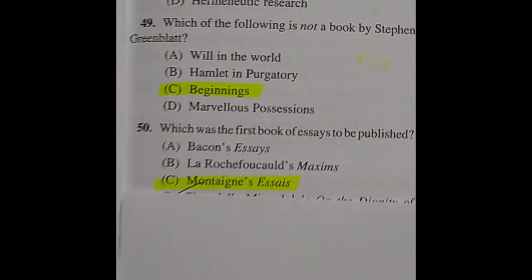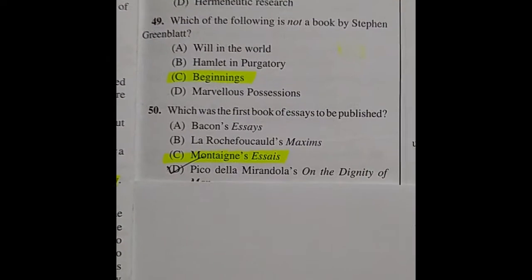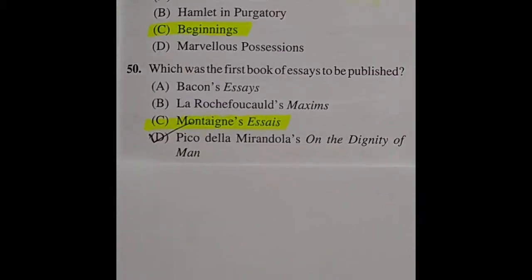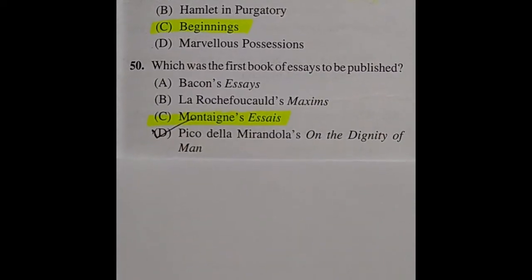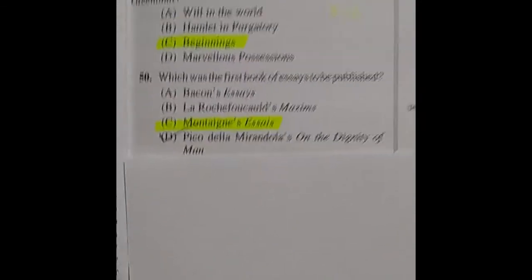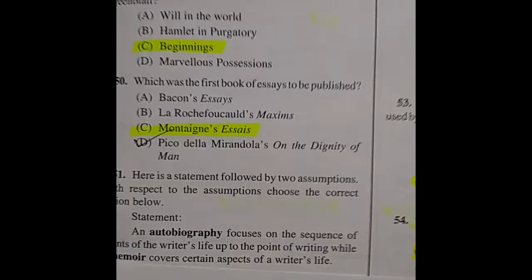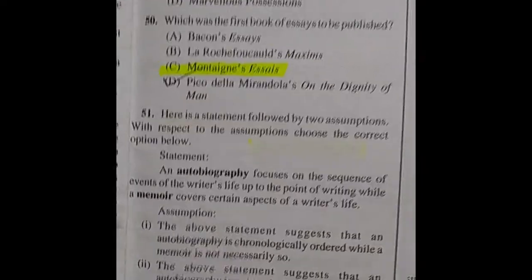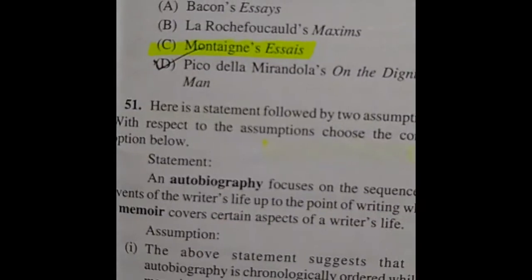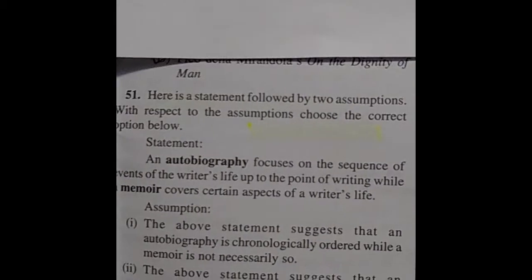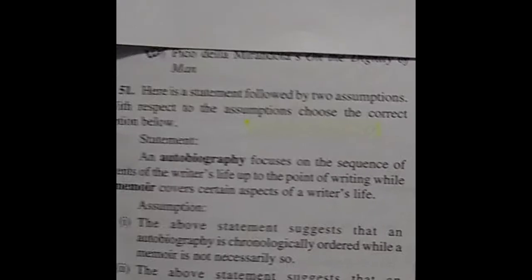Question 50: Which was the first book of essays to be published? The right answer is Montaigne's Essays. Question 51 includes a statement followed by two assumptions.